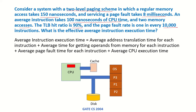The average instruction execution time will be composed of: the time for address translation for each instruction, the time for getting the operands from memory for each instruction, the time required if there is a page fault, and the CPU execution time.